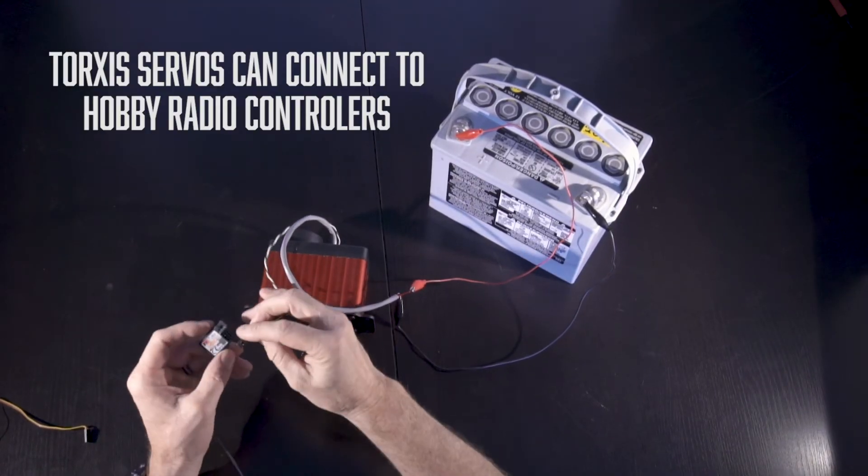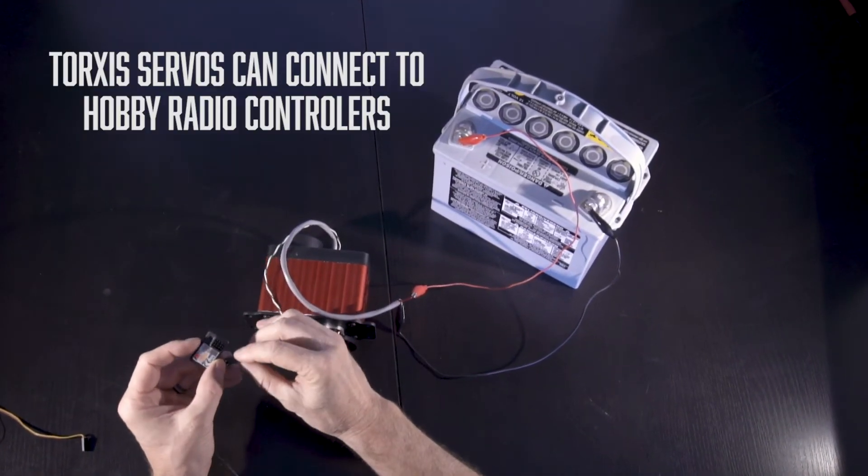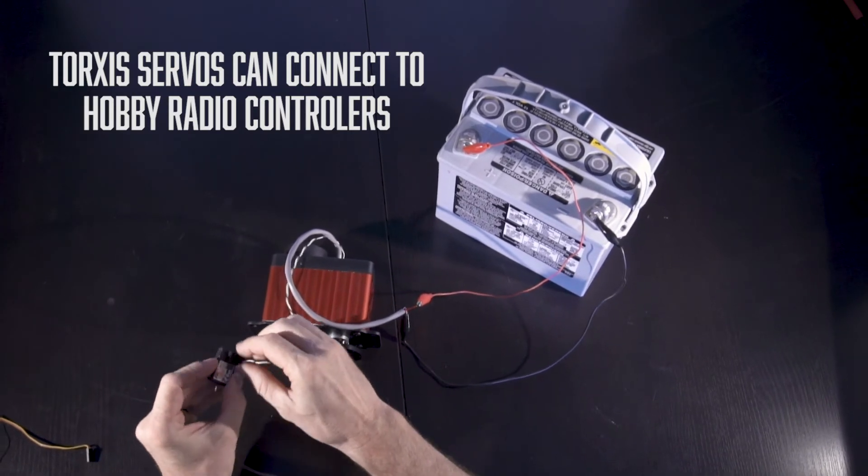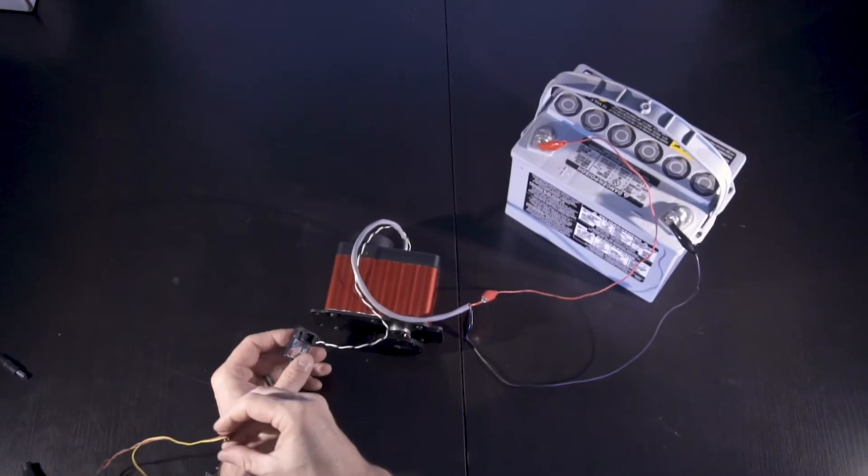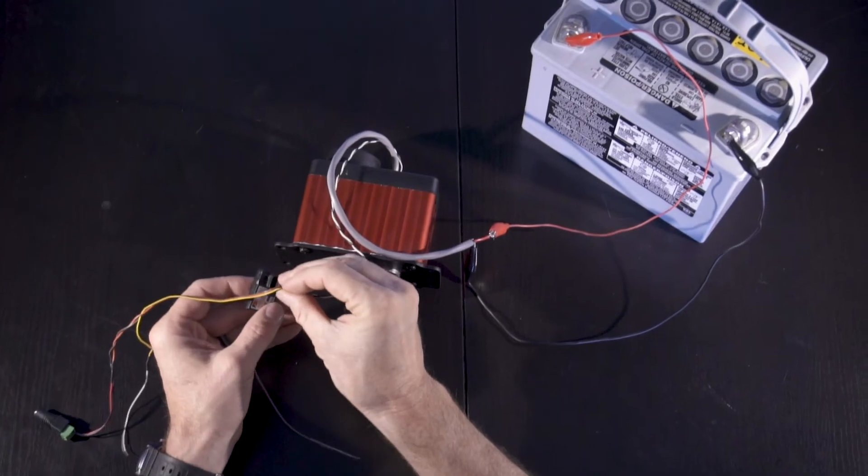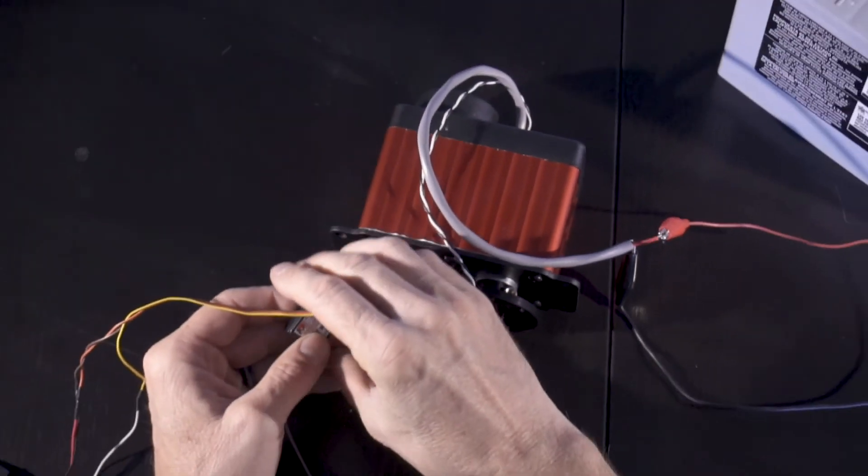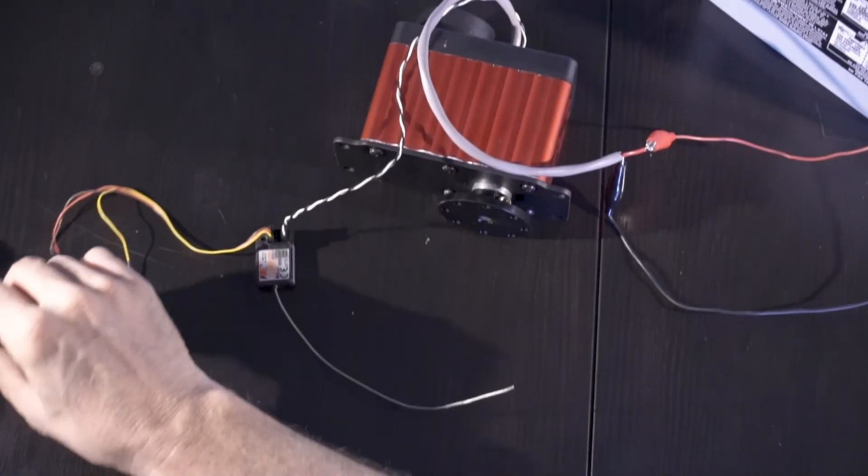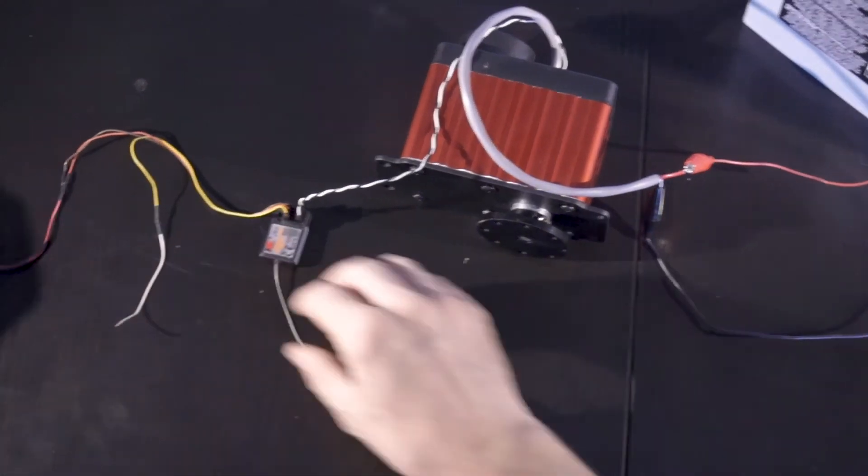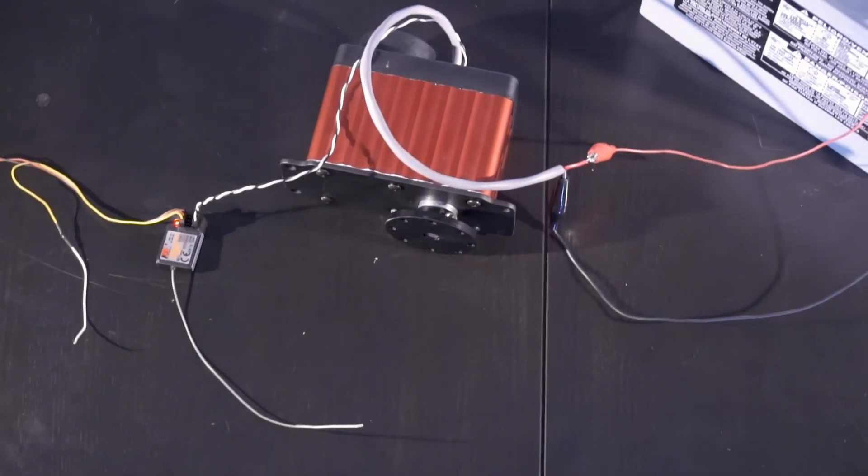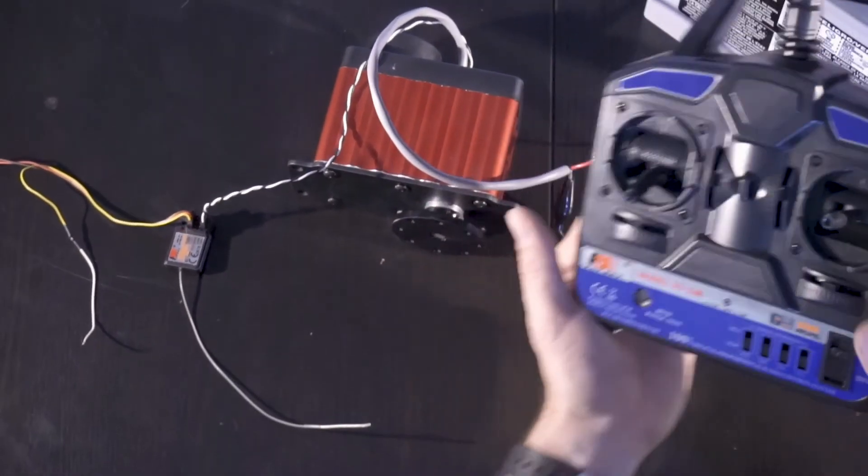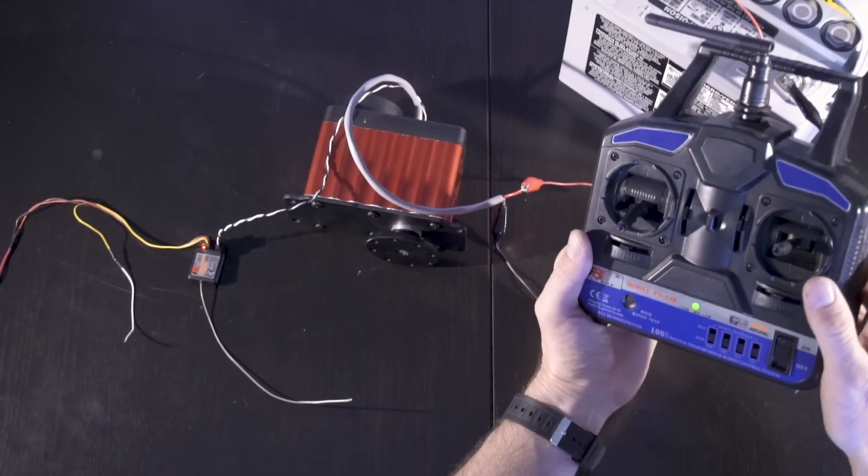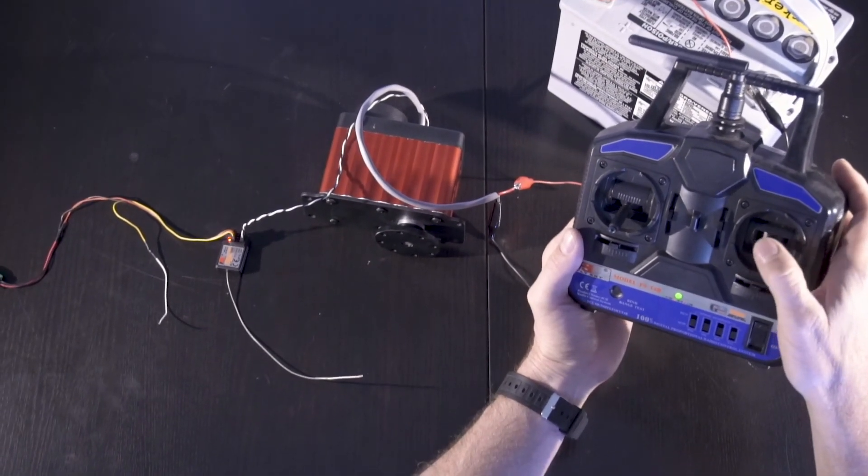And the second line actually fits into the socket on a hobby radio receiver. This can be anybody's radio receiver. This one is a fly sky, but it doesn't have to be that. And then I'll put five volts power to the receiver. And then the transmitter here will turn that on. And the torx of servo wakes up, comes to life.